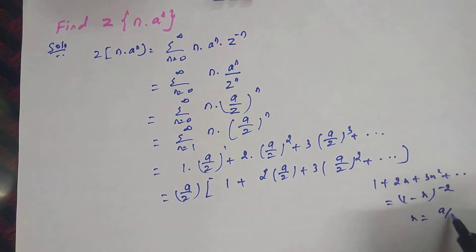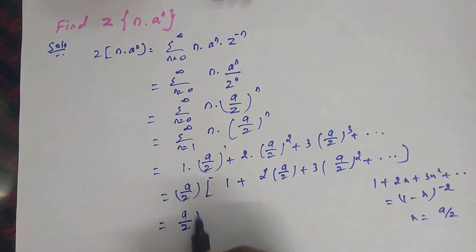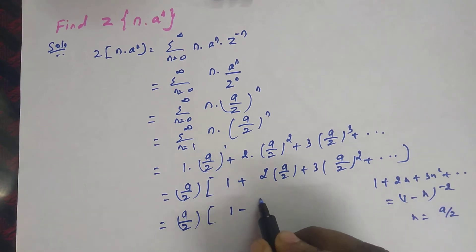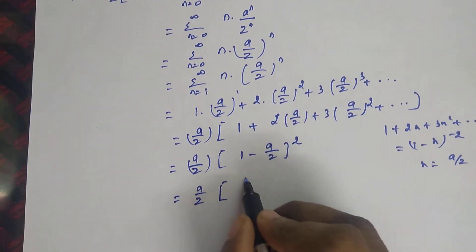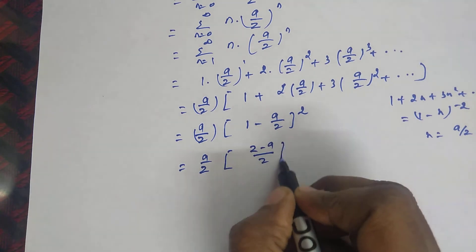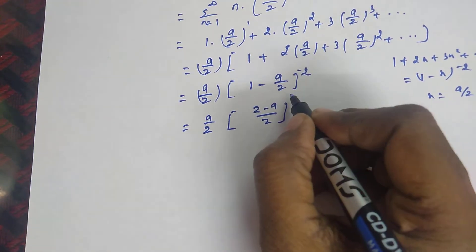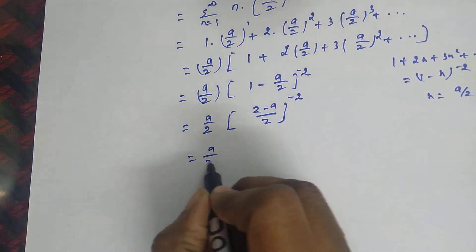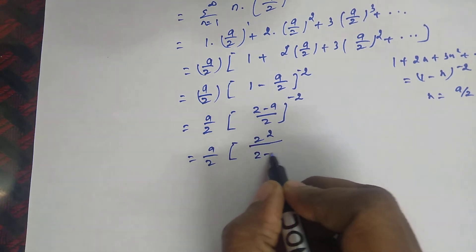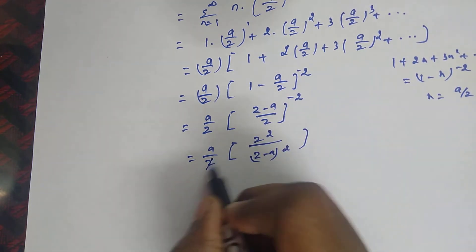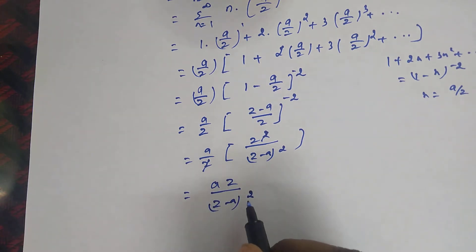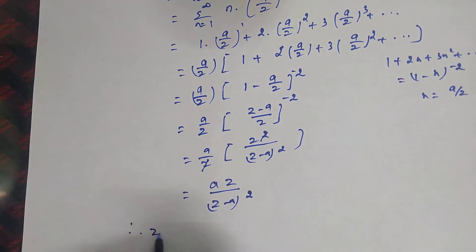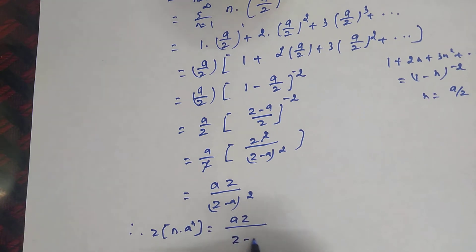In the place of x, here we have a/Z. So the expression is equal to a/Z into 1 minus a/Z whole power minus 2, which can be written as a/Z into z minus a divided by z whole power minus 2. This simplifies to a/Z into z squared divided by z minus a whole squared. Cancelling z, we get a·Z divided by z minus a whole squared. So the Z-transform of sequence n into a power n equals a·Z divided by z minus a whole squared.